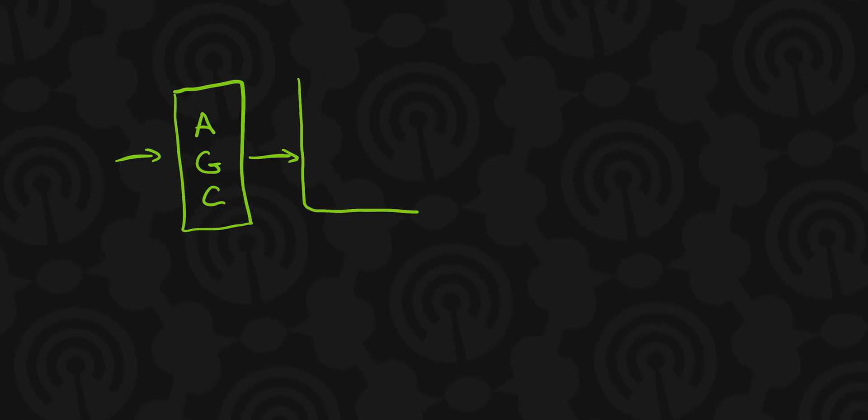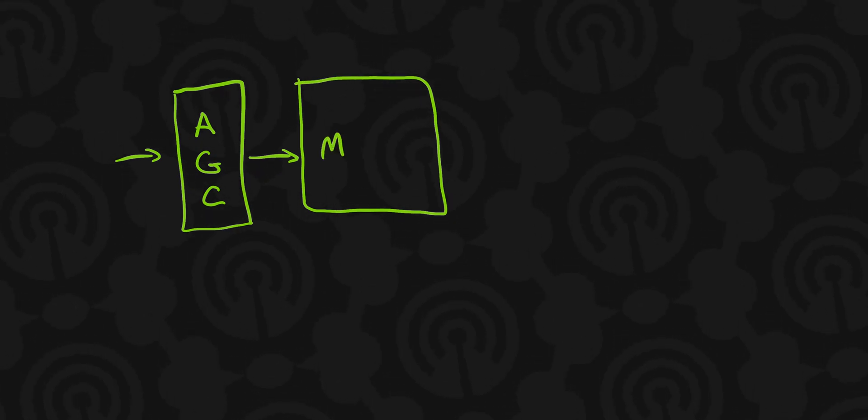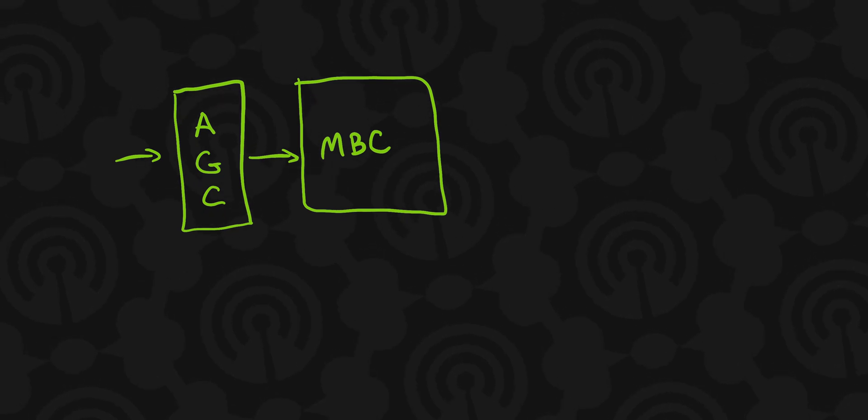The audio then moves to the multiband compression stage. This is where the sound of the station is crafted. The audio is split up into different bands or parts of the audio spectrum. For example, the simplest is a three-band audio processor, which will have audio below about 200 hertz with compression applied to that section, then a mid-band from about 200 hertz to about 3 kilohertz, and finally the high band above 3 kilohertz.